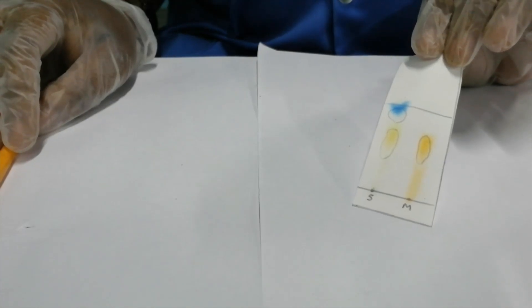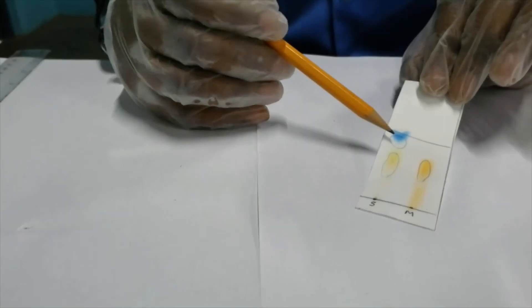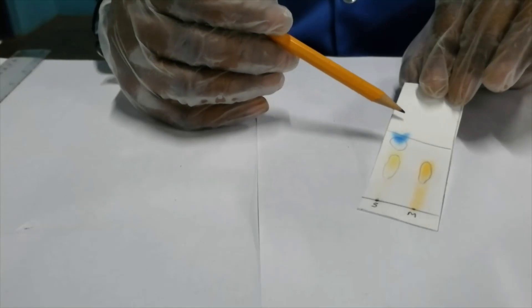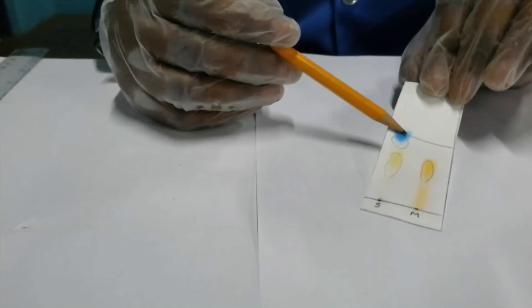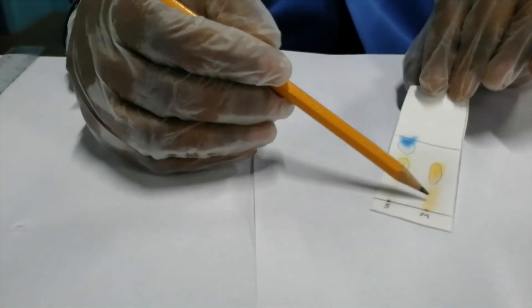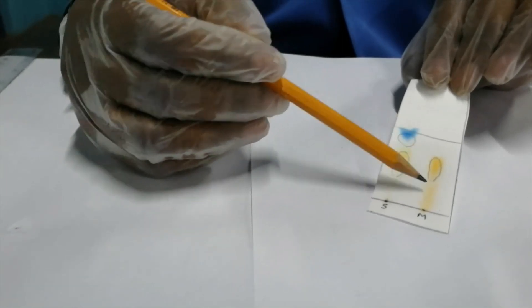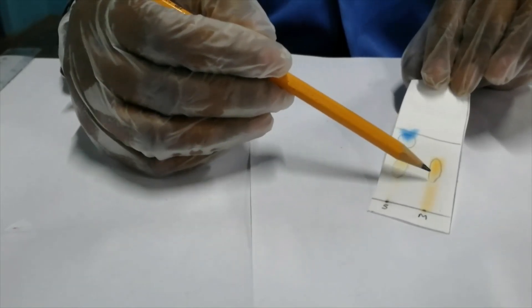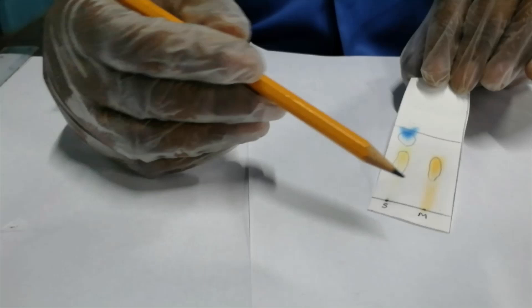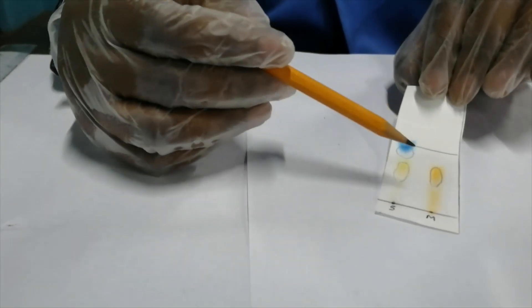Looking at the developed chromatogram, you can see why it was important to mark the solvent front and circle the spots. Because the paper was wet, the different particles still traveled along with the mobile phase, which is why we have the blue above where the line is now. With the methyl orange we have streaking, and the streaks are a result of different particles migrating at different rates along the mobile phase.